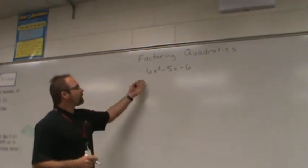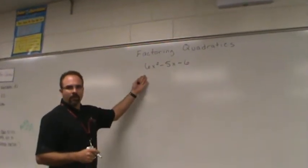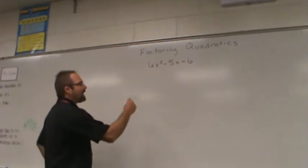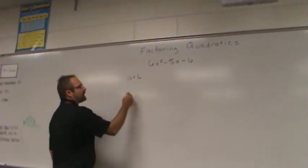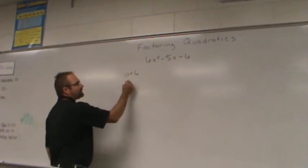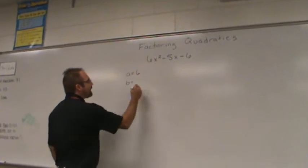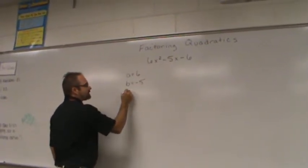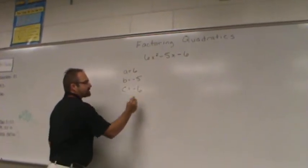You have a quadratic equation. What we want to do is find out what A is — in this case A is 6 — find out what B is — in this case B is negative 5 — and find out what C is. C is negative 6.